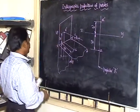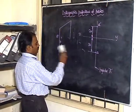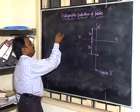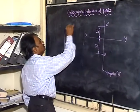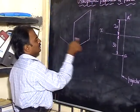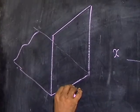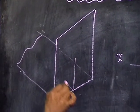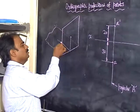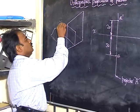Let us move on to the second quadrant. Draw the second quadrant shape. Take the second quadrant — the second quadrant is like this. This is the second quadrant. Take the same location: 20mm height and 30mm breadth. The point is 20mm above HP and 30mm behind VP. When you combine this, you will get the position of capital B.